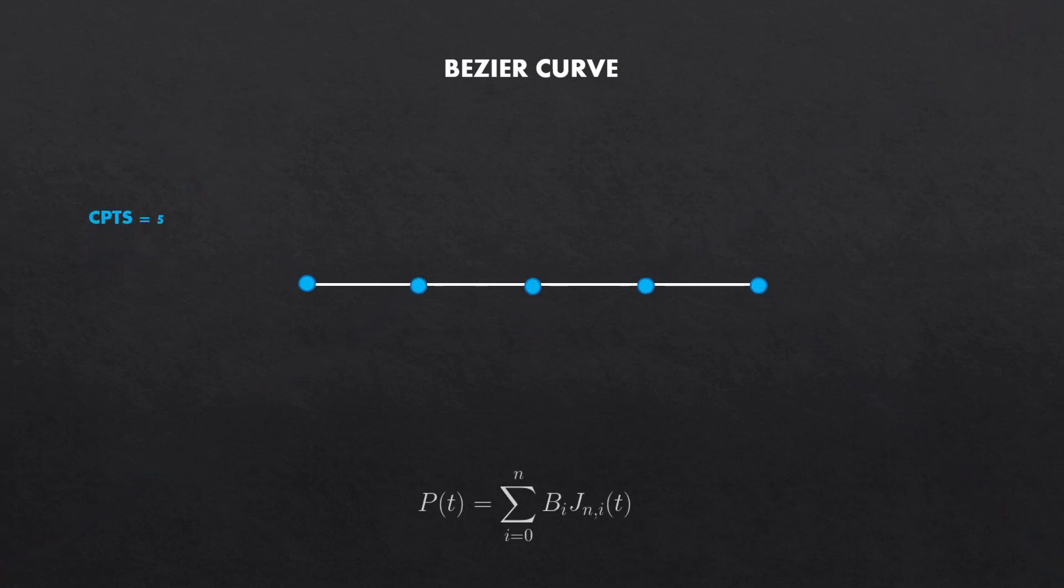First let's recall what the Bezier curve is. I will define five control points and for this example let's just keep it simple and make a straight line. We have two indices, i and n.